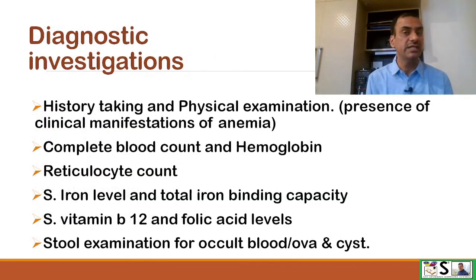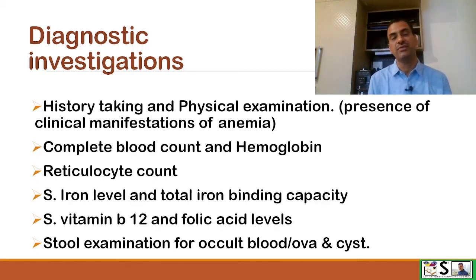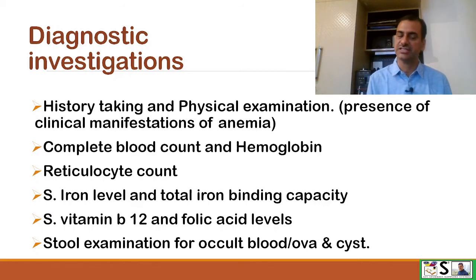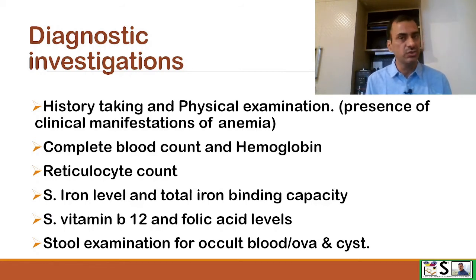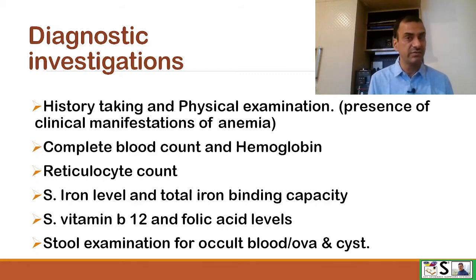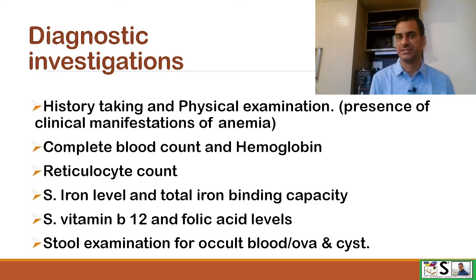How will we diagnose anemias? First, history taking and physical examination can reveal a low level of hemoglobin. Then for confirmation, we go for blood investigations such as complete blood count with hemoglobin, reticulocyte count, serum iron and total iron binding capacity, serum vitamin B12 and folic acid levels, and stool examination for occult blood and ova and cysts.